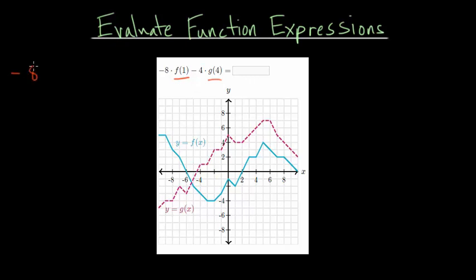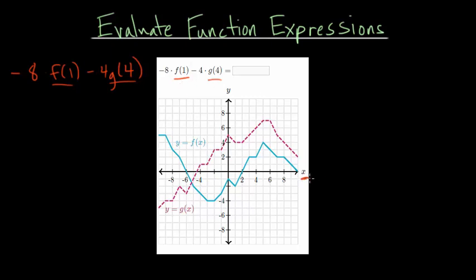Let me rewrite this with minus 8 times f of 1 — we need to figure that out — and minus 4 times g of 4 — we also need to figure that out. Let's start with f of 1. f is our blue curve, so we find an x value of 1, because the number on the inside is our independent variable — that's always our x value.